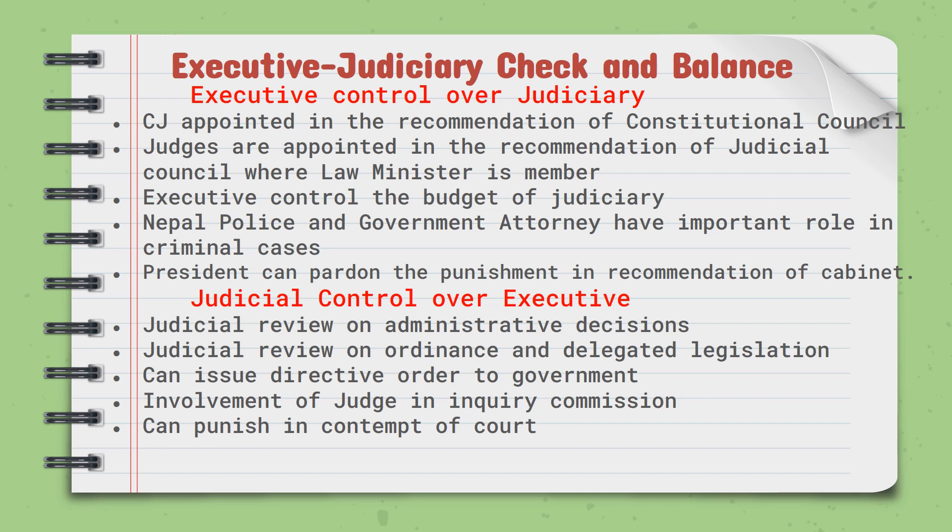What is the relation between the executive and judiciary in terms of check and balance? Regarding executive control over the judiciary: the Chief Justice is appointed on the recommendation of the Constitutional Council, which is headed by the Prime Minister. Judges are appointed on the recommendation of the Judicial Council, where the Law Minister is a member. The executive controls the budget of the judiciary. Nepal Police and government attorneys have an important role in criminal cases. The President can pardon punishments on the recommendation of the cabinet.